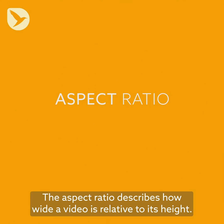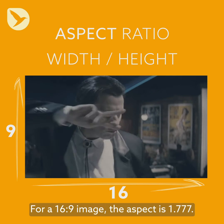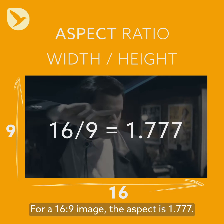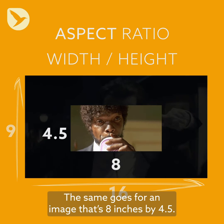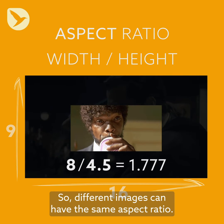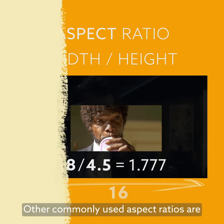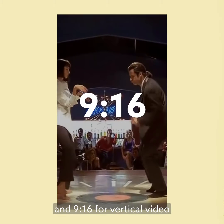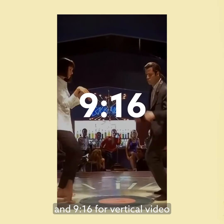The aspect ratio describes how wide a video is relative to its height. For a 16 by 9 image, the aspect is 1.777. The same goes for an image that's 8 inches by 4.5 — so different images can have the same aspect ratio. Other commonly used aspect ratios are 1 by 1 for square, and 9 by 16 for vertical video.